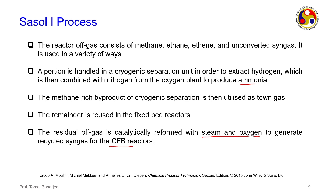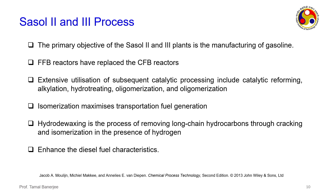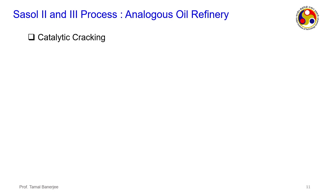The primary objective of Sasol 2 and 3 plants is the manufacture of gasoline, whereas Sasol 1 aimed to produce waxes. Fluidized bed reactors replace the circulating fluidized bed reactors. Processes such as catalytic reforming, alkylation, hydrotreating, and oligomerization are used. Isomerization maximizes transportation fuel generation, and hydrode-waxing — breaking long-chain hydrocarbons through cracking and isomerization in the presence of hydrogen — enhances diesel fuel characteristics.